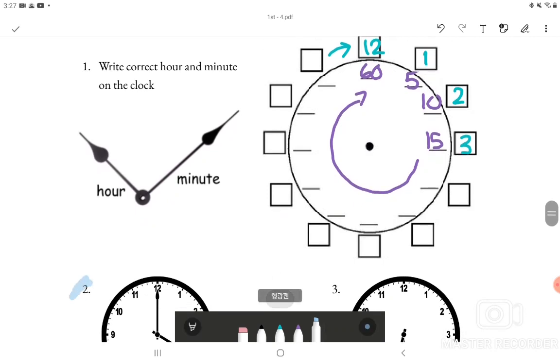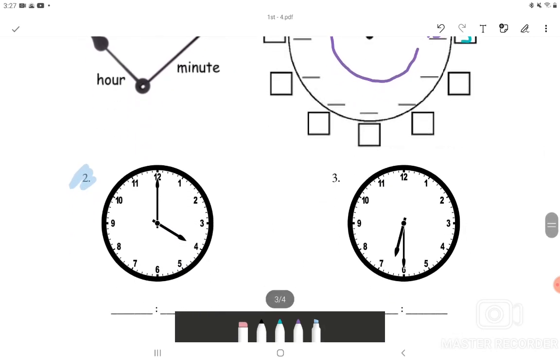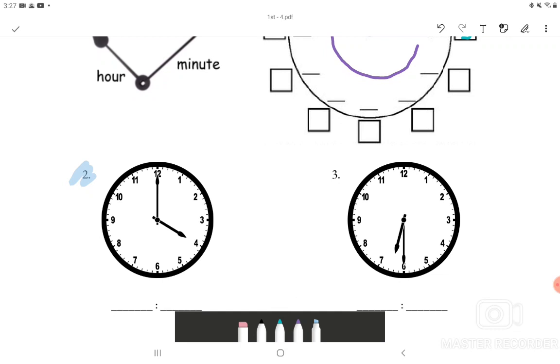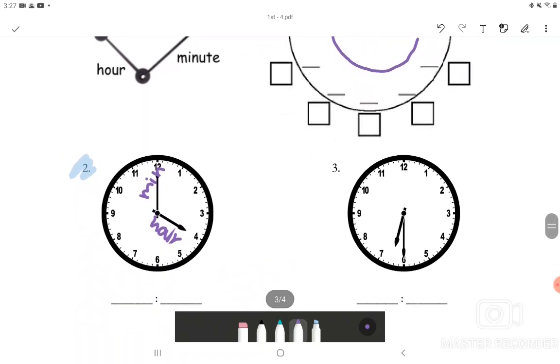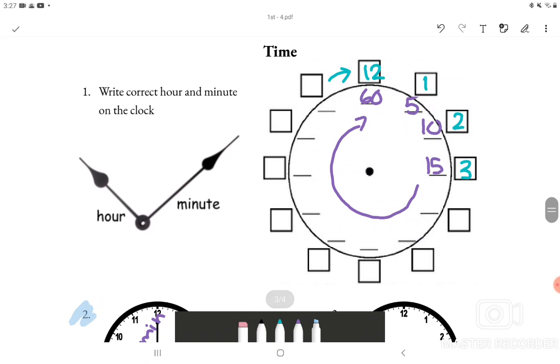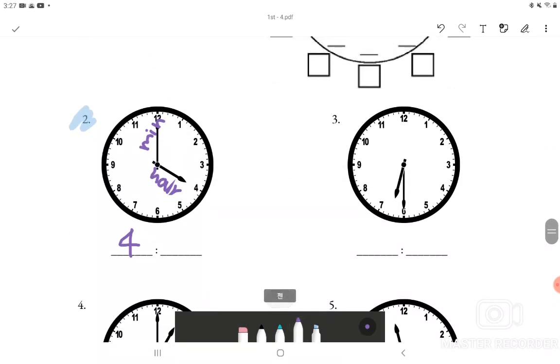Let's try number 2. Number 2 says it has the shorter line on the 4 and the longer line on the 12. The shorter one is for hour and the longer one is for minute. Let's look at the shorter one which is hour. It's on the 4 so we know that it's 4 something. And when the longer line is on the 12 we see that it's 60 or it could be also 0, 0. So we know that the answer for number 2 will be 4 o'clock.